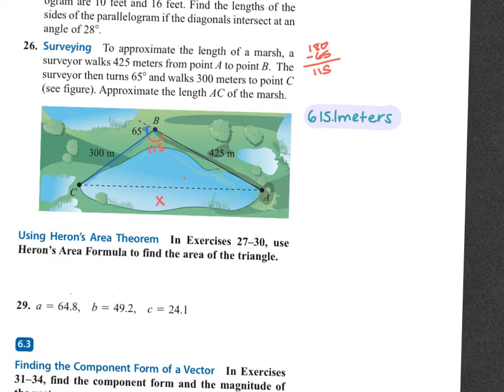So if I want to know AC, I started to set up Law of Sines, but this is actually Law of Cosines, not Law of Sines. This is side-angle-side, so that's Law of Cosines. One of your challenges is figuring out what information you've got. I know I have two sides and the included angle — side-angle-side — so we're going to do Law of Cosines.